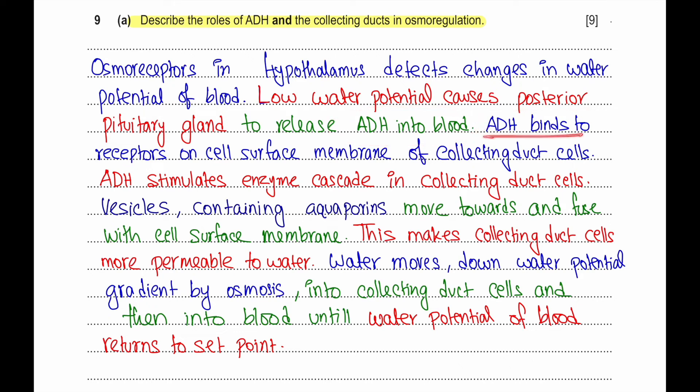As ADH binds to the receptor cells on the cell surface membrane of the collecting duct cells of the kidney, ADH will stimulate an enzyme cascade in the collecting duct cell. This causes vesicles containing aquaporins to move towards and fuse with the cell surface membrane of the collecting duct cells. This makes the collecting duct cells more permeable to water because there are more aquaporins. Water moves down the water potential gradient by osmosis into the collecting duct cells and then into the blood until the water potential returns to a set point and ADH is broken down.